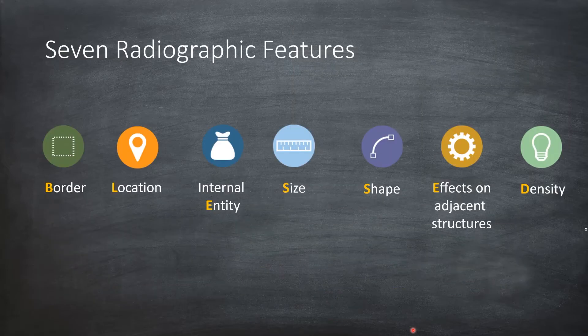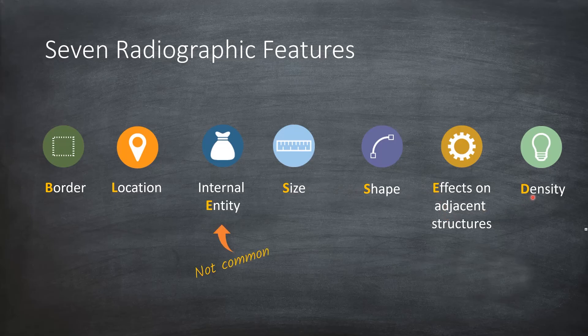There you go — an example of a radiographic note using the BLAST format: border, location, internal content or internal entity, size, shape, effects on adjacent structures, and density. In many lesions, you may not be able to describe the internal content. In some lesions, an internal content such as a calcification may be a critical clue for arriving at a diagnosis. Thank you very much — I'll see you in another video.